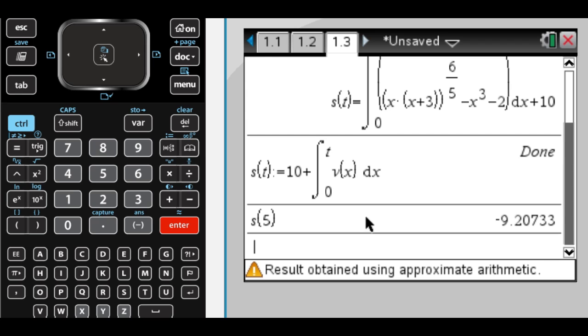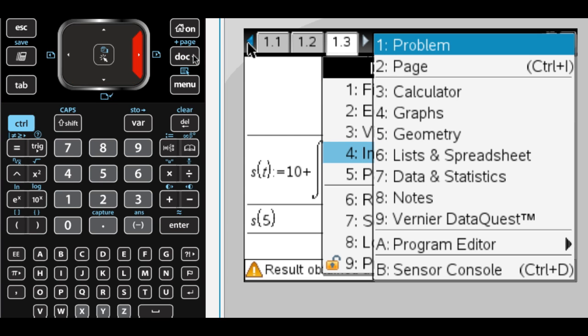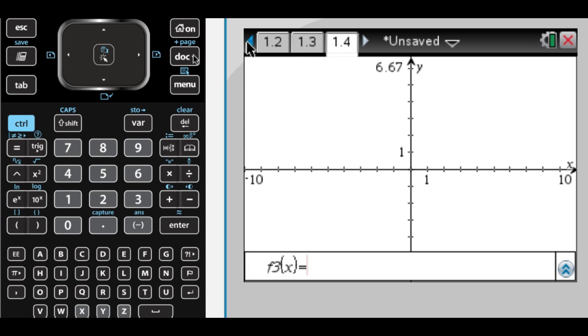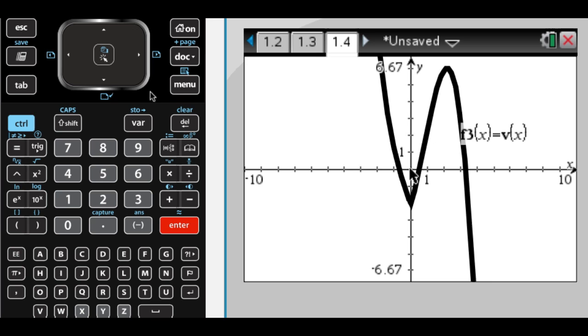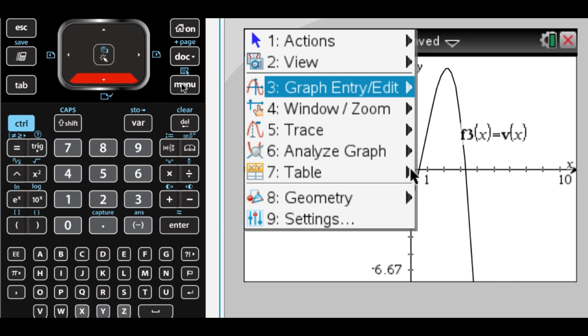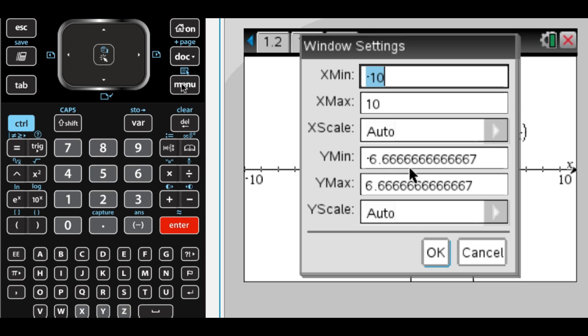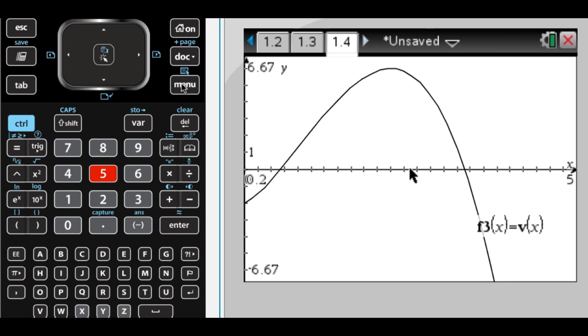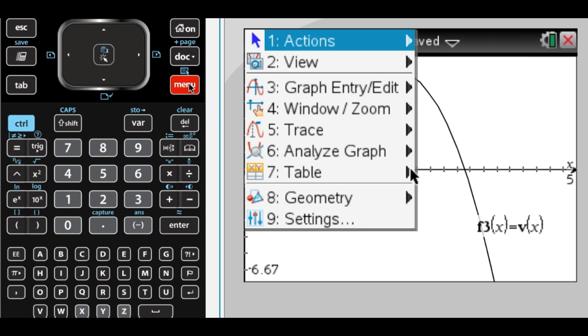And the next thing we want to do is find the times between 0 and 5 when the particle changes direction. So a change in direction means that velocity has a sign change. So let's go back and graph v of x again and change our window to be between 0 and 5.